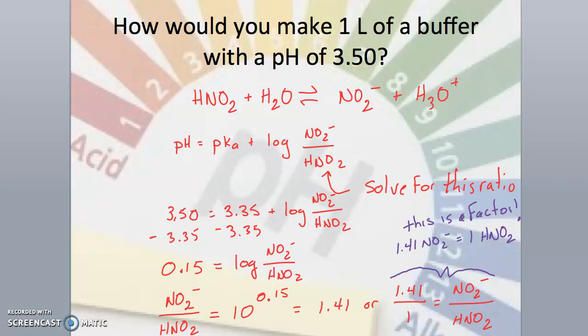Next I will solve for the ratio of base to acid, and these are the amounts in moles that I can add to one liter to produce the buffer. Notice how the ratio is 1.41, which can be written as 1.41 over 1, and these are the relative amounts of the base and the acid. I can even make this ratio into a factor if I need to.